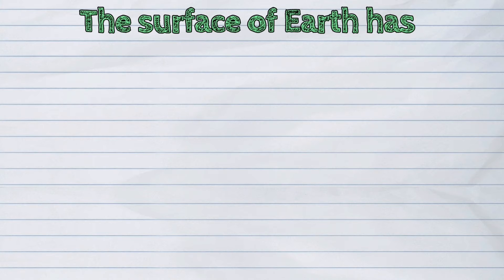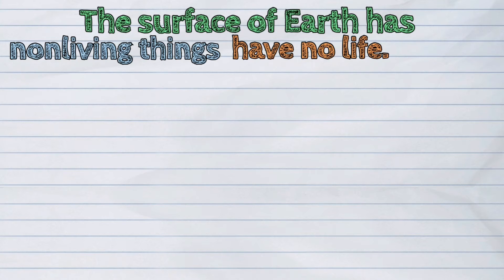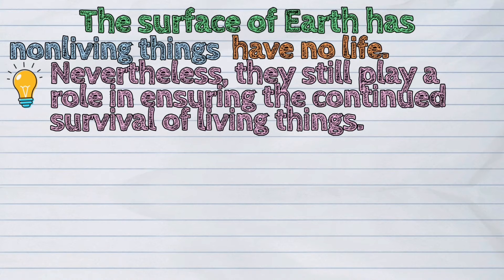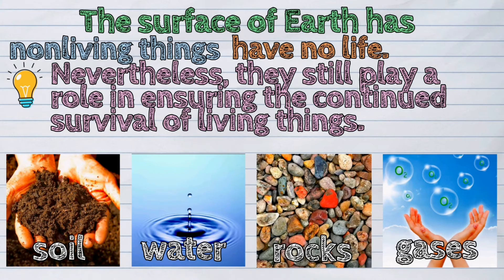Aside from living things, there are also non-living things on Earth. Non-living things have no life. Nevertheless, they still play a role in ensuring the continued survival of living things. Soil, water, rocks, and gases are some examples of non-living things.